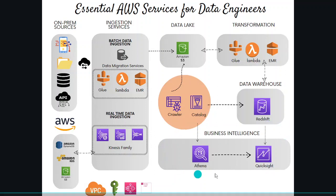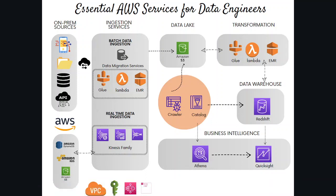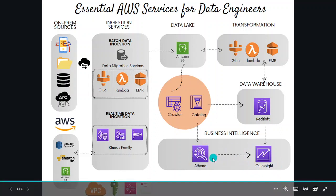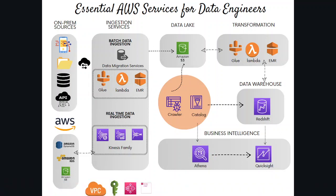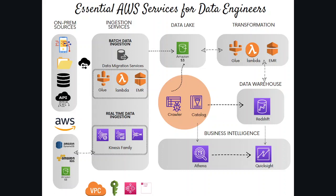Looking at the business intelligence layer, QuickSight is used to provide self-serve analytics to business users. It's a data visualization tool where business users can view dashboards or BI reports. We also see Athena in the business intelligence layer. Athena is an interactive query service that allows users to analyze data directly using standard SQL queries without needing to load the data or run ETL. You can think of it as a SQL client where users can run ad hoc queries or do exploratory analysis.